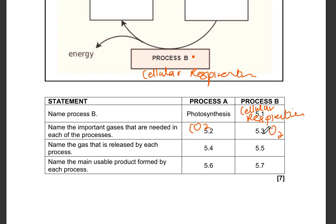Gas that is released, oxygen, carbon dioxide. Name the main usable product formed by each process. 5.6 usable product will be glucose. And for process B, that will be energy.